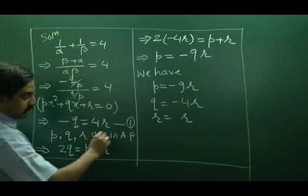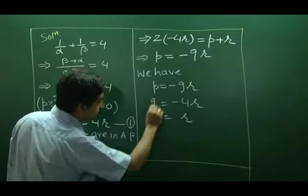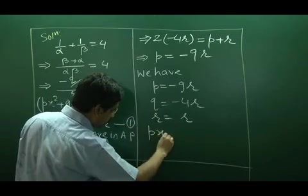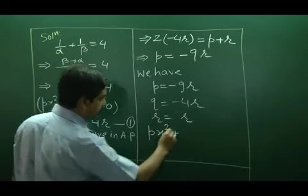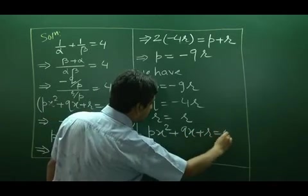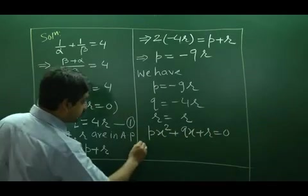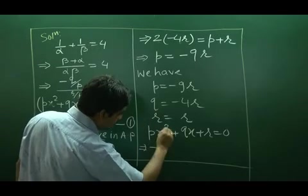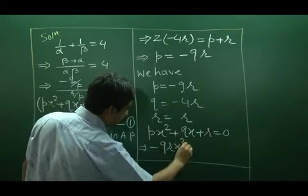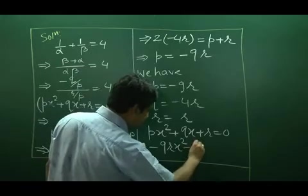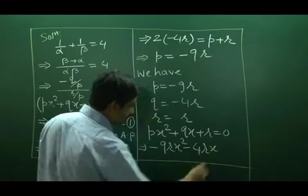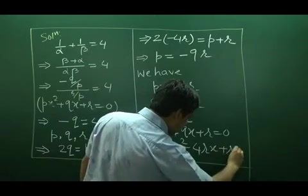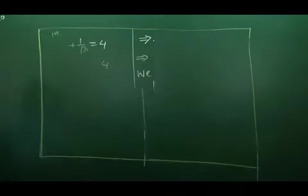So, our equation which is Px square plus Qx plus R is equal to 0 becomes minus 9Rx square minus 4Rx plus R is equal to 0.